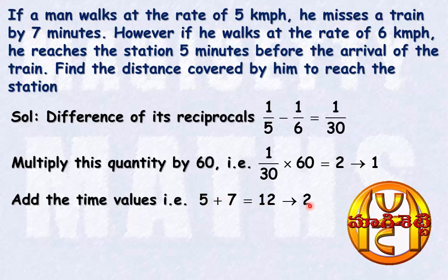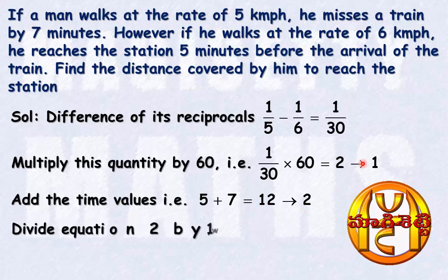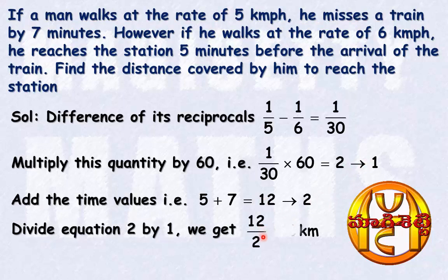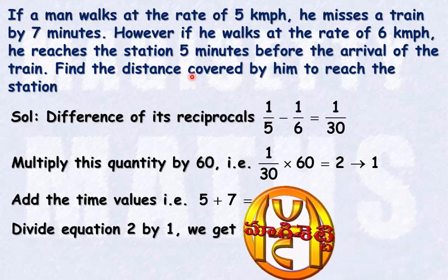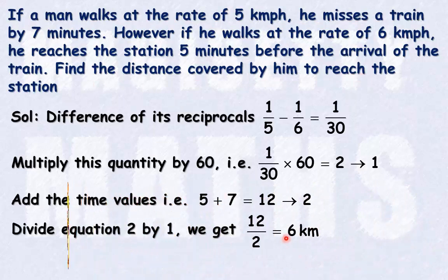After that, just divide equation 2 by equation 1. We get 12 divided by 2, which equals 6. This is the distance covered by him to reach the station — 6 km.